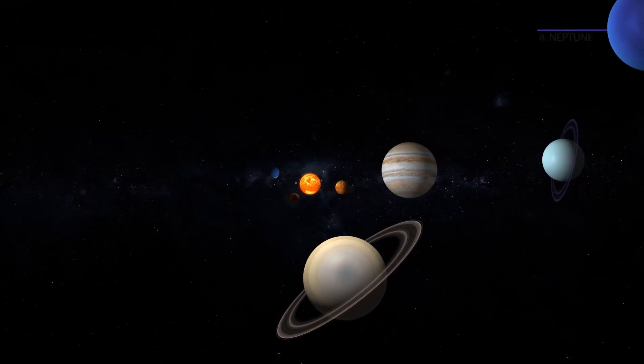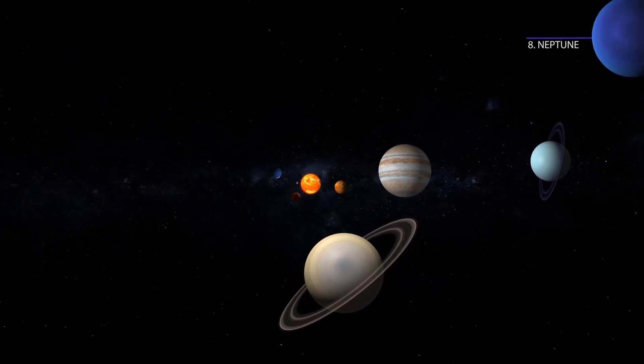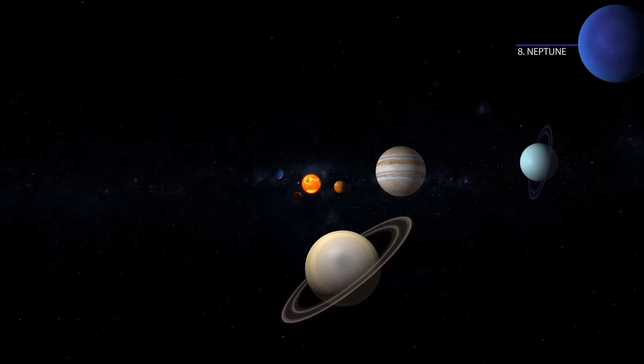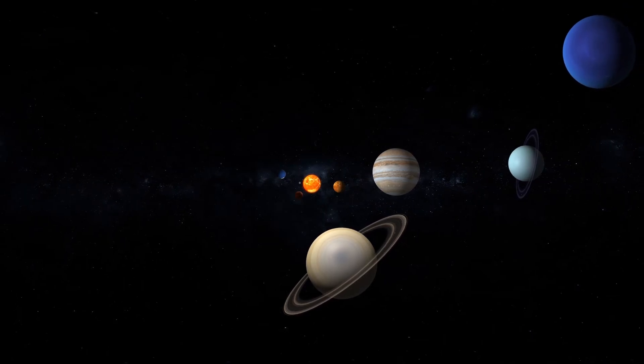Neptune is the eighth and the last major planet orbiting our sun. It is dark, cold, and is full of supersonic winds. Now let us compare the sizes of the planets.